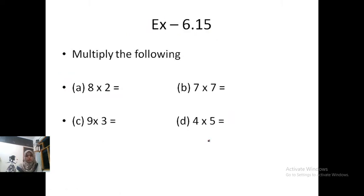Multiply the following. Exercise 6.15. 8 x 2 is 16. So our answer is 16. Next question. Point B. 7 x 7 is 49. So our answer is 49.